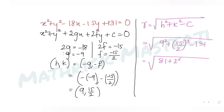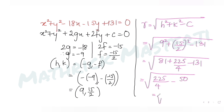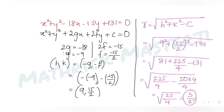Computing: 9² + (15/2)² - 131 = 81 + 225/4 - 131. That gives 225/4 + (81 - 131) = 225/4 - 50. Converting: (225 - 200)/4 = 25/4. The square root of 25/4 gives a radius of 5/2 for the first circle.